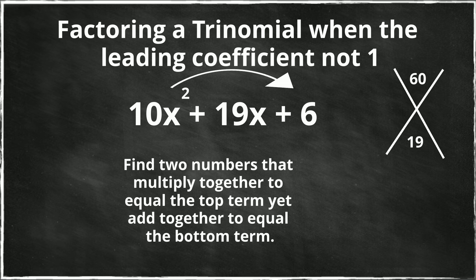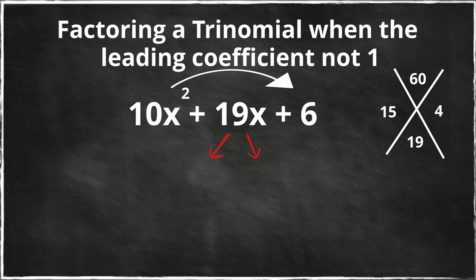So if I factor 60, I have 1 times 60, 2 times 30, 4 times 15. And if you add 15 and 4, you indeed get 19. So I have these two terms. Now I'm going to take the middle term and basically split it in half, and then rewrite the trinomial.